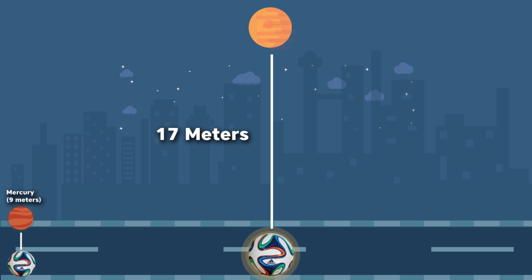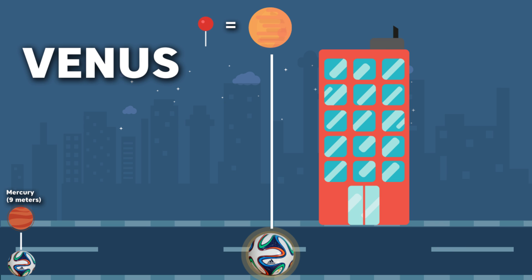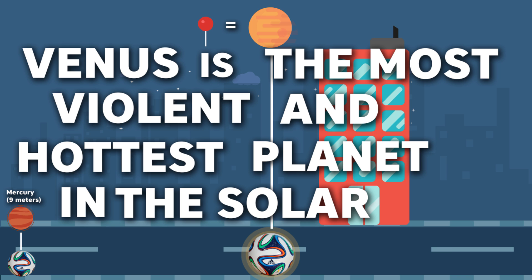Next up is Venus. Venus will be 17 meters away from our soccer ball sun with the size of a head of a pin. It's nearly impossible for us to see a pinhead from 17 meters, the height of a 5-story building. Even though the distance is far, Venus is the most violent and hottest planet in the solar system.